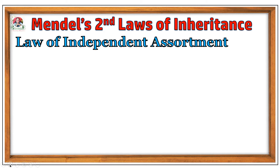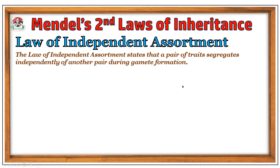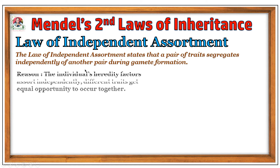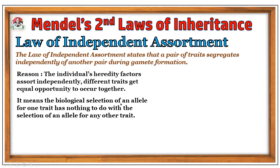Coming to the second law of inheritance, the law of independent assortment. This law states that a pair of traits segregates independently of another pair during gamete formation. The reason is that the individual's hereditary factors — which are actually genes — assort independently, and different traits get equal opportunity to occur together. This also means that the selection of an allele for one trait has nothing to do with the selection of an allele for any other trait.